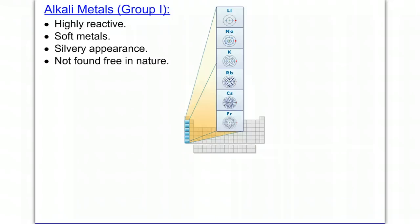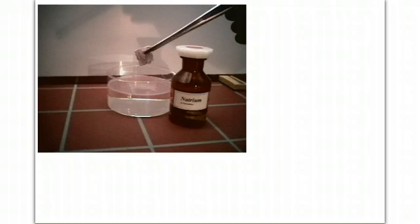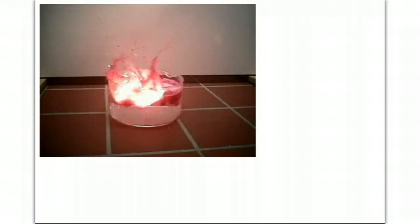Alkali metals, which are located in group 1 on the periodic table, have one valence electron each. They are highly reactive because they like to lose that one valence electron. They are soft metals. You can cut them with an X-Acto knife. They are very silvery in appearance, and they're not found free in nature because they're so highly reactive that you don't generally find them free. This is an example of sodium, and it's so highly reactive that it will react immediately with water, and when placed in water, it will actually catch on fire.